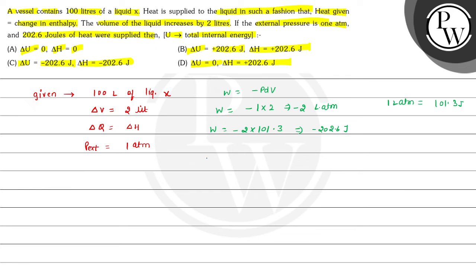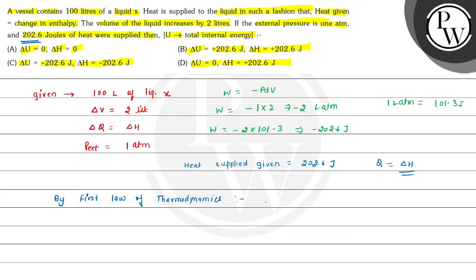Now, heat supplied Q = 202.6 joules, and it is given that Q = ΔH. By the first law of thermodynamics, ΔU = Q + W. So ΔU = 202.6 + (−202.6) = 0. The value of ΔU comes out to be 0.